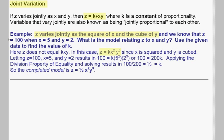In this same example, let's say we know that z equals 100 when x equals 5 and y equals 2, and we want to use this given data to solve for the value of k. We plug in 100 for z, 5 for x squared, and 2 for y cubed, and the equation we get is 100 equals k times 25 times 8, which simplifies to 100 equals 200k. Solving for k gives us k equals 1 half. So our completed model is z equals 1 half x squared y cubed.